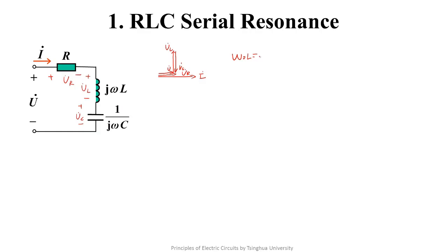We define the current as the reference phasor. UR and I are in phase. UL leads I 90 degrees. UC lags I 90 degrees. So the voltage and the current are in phase.